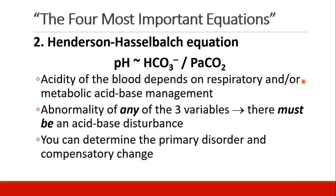The second equation is the Henderson-Hasselbalch equation. In its simplest form, it says that pH is proportional to the bicarbonate concentration divided by the PaCO2. What this equation tells us is that the acidity of the blood depends on respiratory and/or metabolic acid-base management. If any of these three variables is abnormal, there must be some sort of acid-base disturbance. We can determine the primary disorder and the compensatory change, and we'll come back to this equation in much more detail next semester.